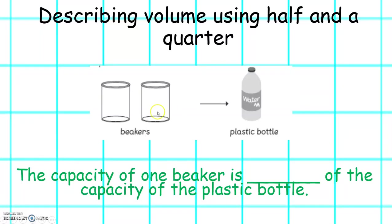The capacity of one beaker is something of the capacity of the plastic bottle. What do you think it is? Well done — it is half. So the capacity of one beaker is half of the capacity of the plastic bottle.